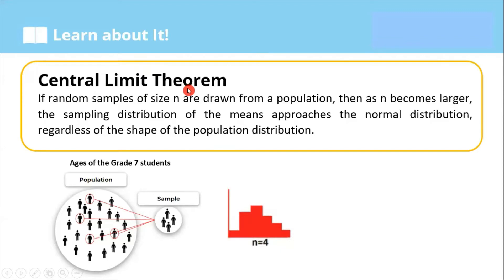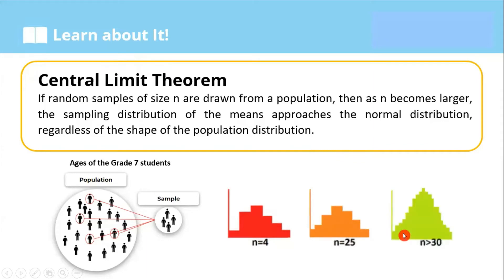Let's call the central limit theorem to the rescue. As defined by the theorem, when you increase the sample size, the distribution of the sample means follows a normal distribution, regardless of the distribution of the underlying population. In short, according to this theorem, the larger the sample size, the more normal the distribution of sample means becomes.